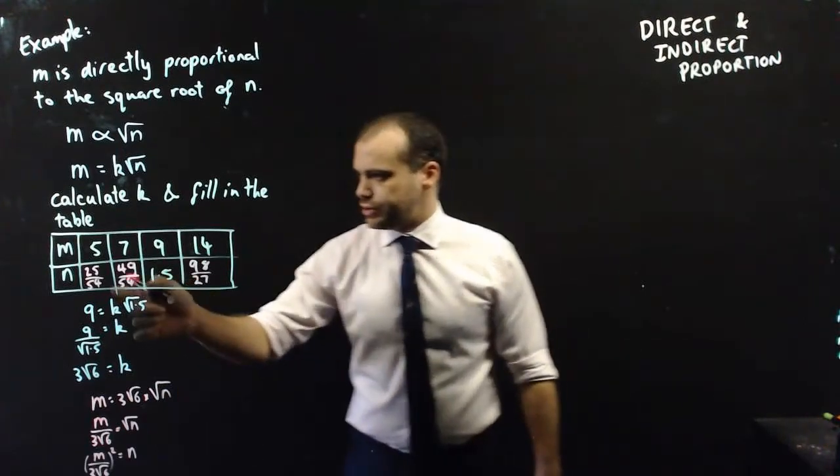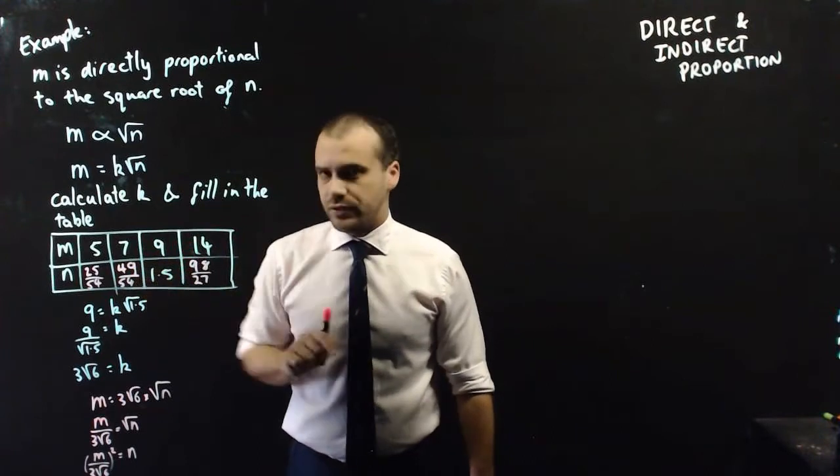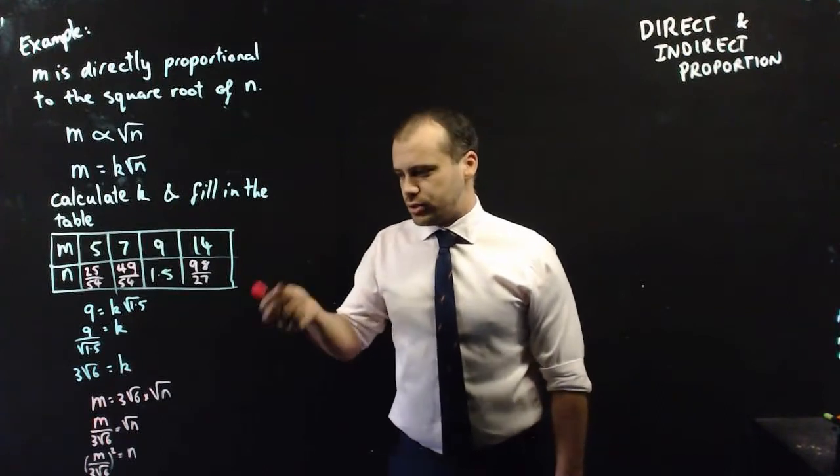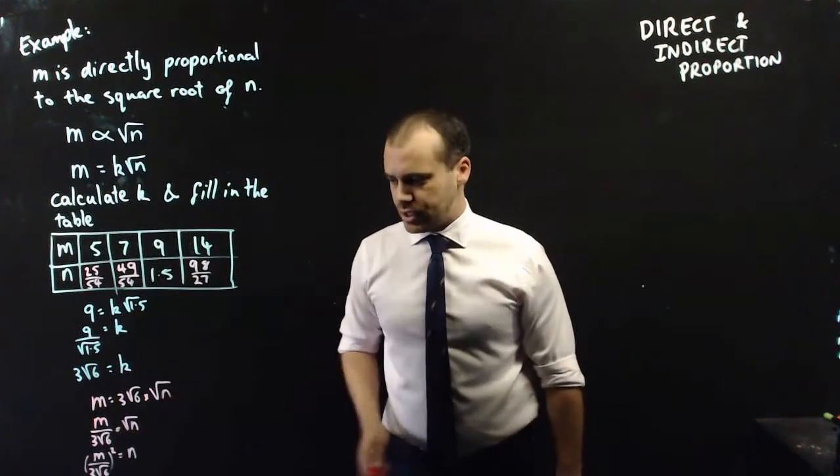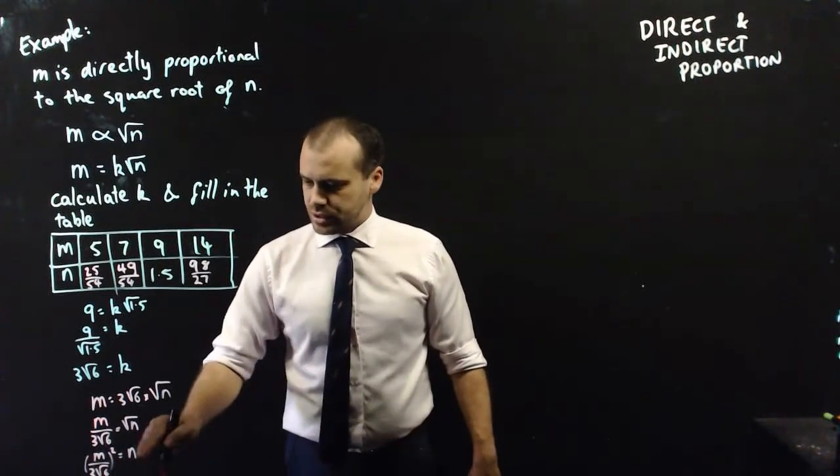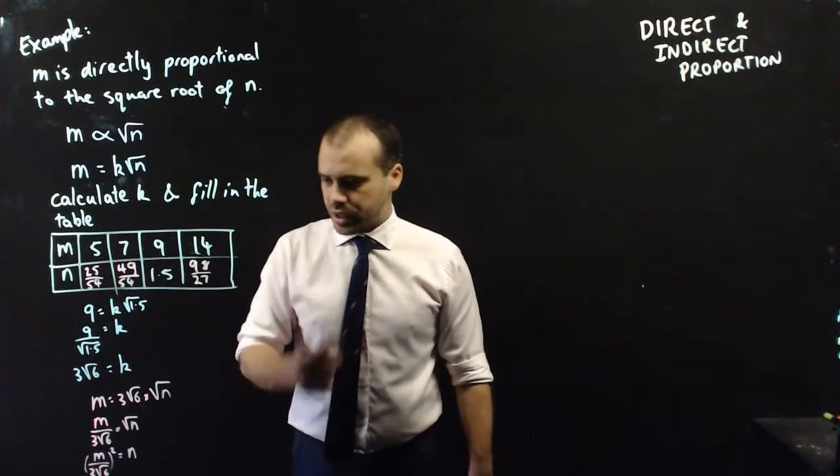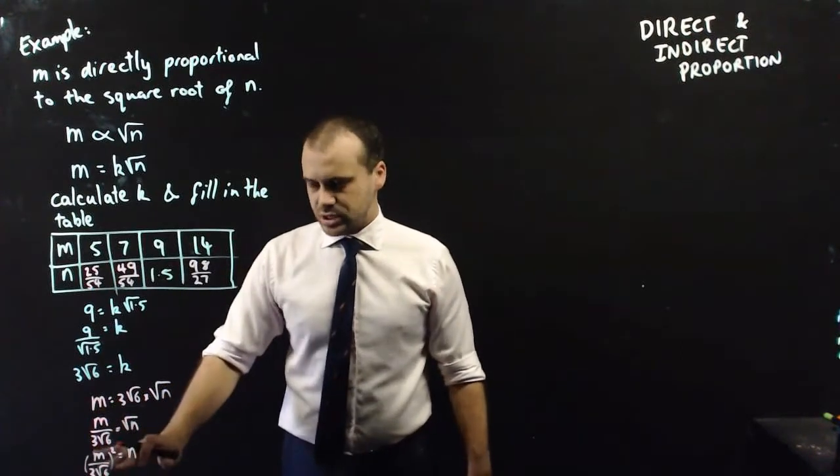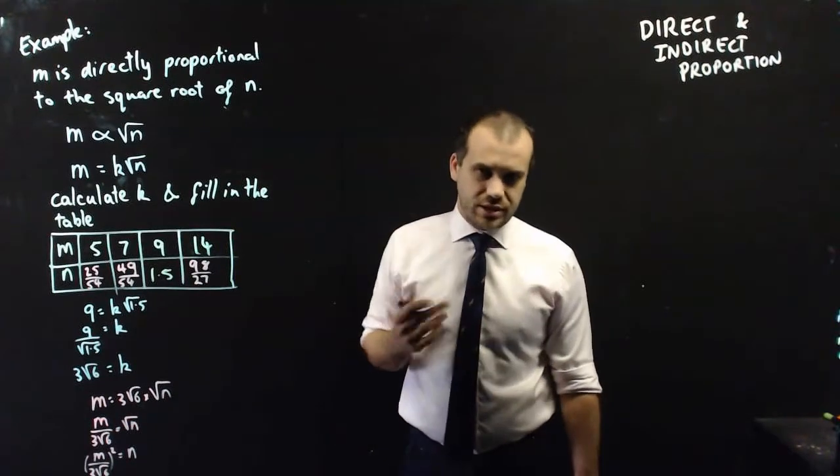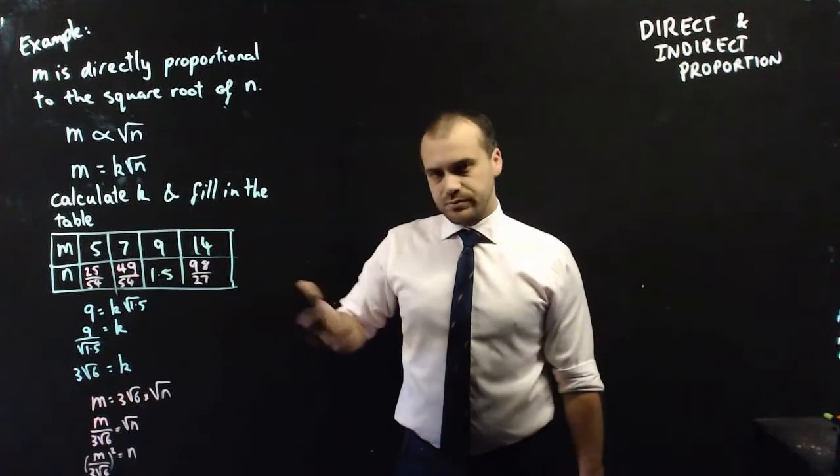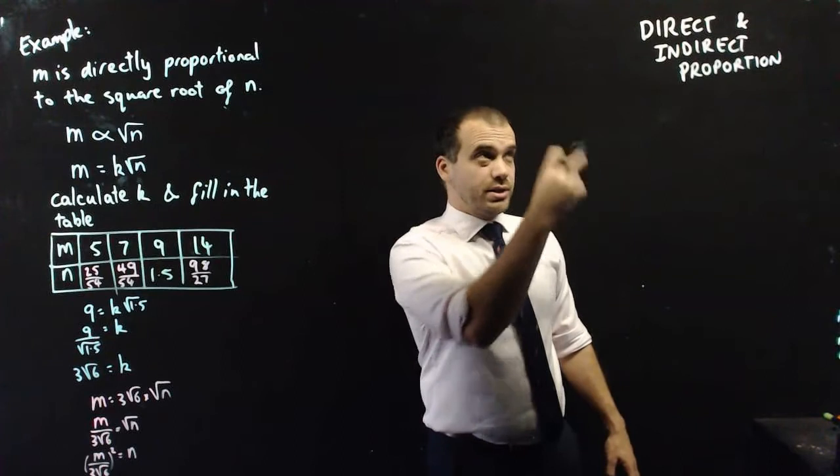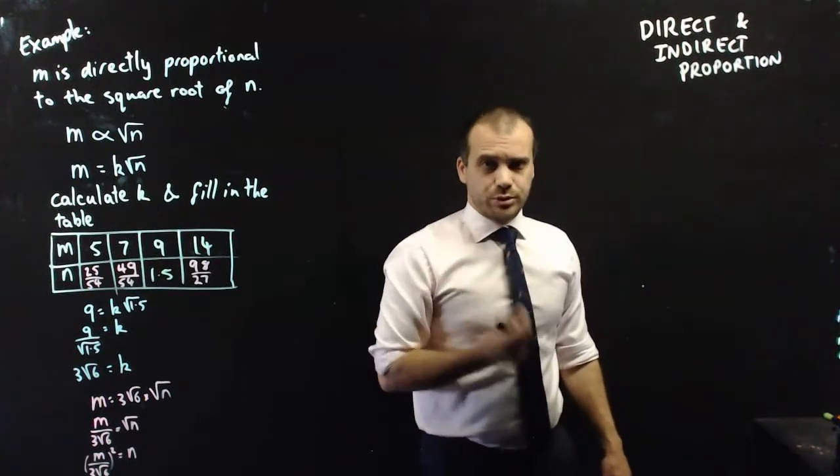Now, when you sub those values in, you get 25 over 54, 59 over 54 and 98 over 27. Now, there is another way you can do it. Rather than putting values into that formula each time, you can just sketch that formula. So, replace the n with y, replace the m with x. Sketch that formula and then do a bunch of calculations on the graph on your graphics calculator. Either way, it works. Come and talk to me about your graphics calculator if you'd like to see how to do that. Now, everything I've talked about is direct proportion, but to talk about indirect proportion,